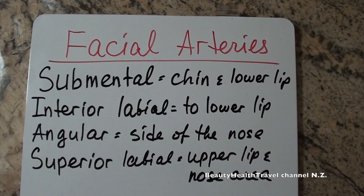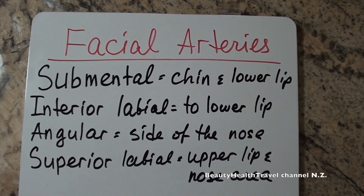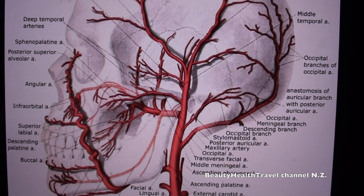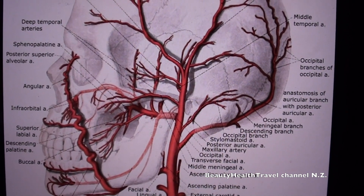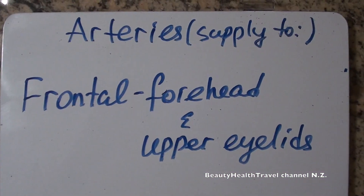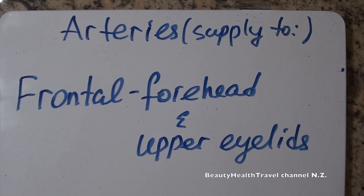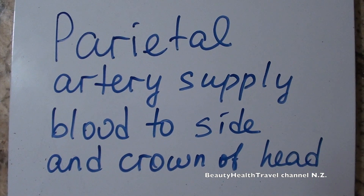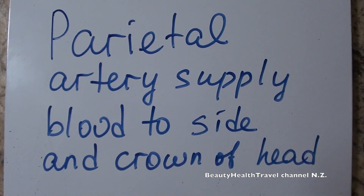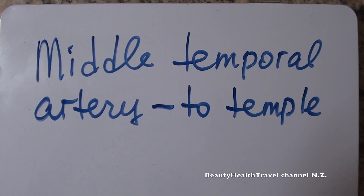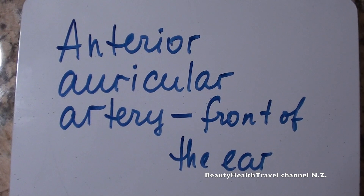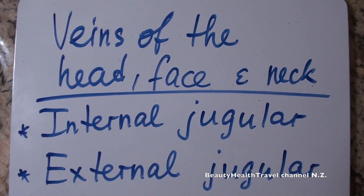The posterior auricular artery supplies the skin and muscles above and behind the ear. Facial arteries include the submental artery supplying the chin and lower lip, the inferior labial artery to the lower lip, the angular artery to the side of the nose, and the superior labial artery to the upper lip and nose area. The frontal artery supplies the forehead and upper eyelids, the parietal artery supplies the side and crown of the head, and the middle temporal artery supplies the temple. The anterior auricular artery supplies blood to the front of the ear.